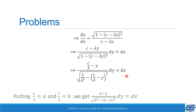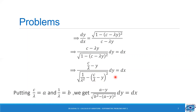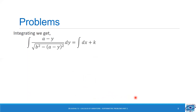Now let us integrate. Before that, let us substitute c/lambda equal to a and 1/lambda equal to b. So we get (a minus y) divided by root of b square minus (a minus y) whole square dy equal to dx. Integrating: integral of (a minus y) divided by root of b square minus (a minus y) whole square dy equals integral dx plus k.